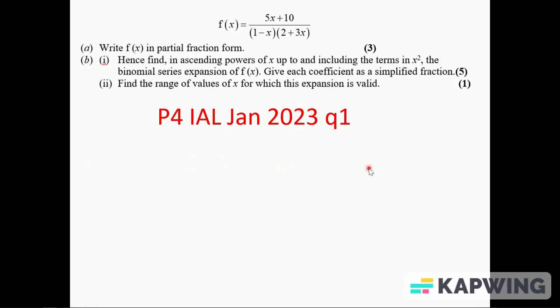I've got P4 International A-Level January 2023 Question 1. We've got some partial fractions and binomial series expansion. For the partial fraction, we write A over (1-x) plus B over (2+3x).